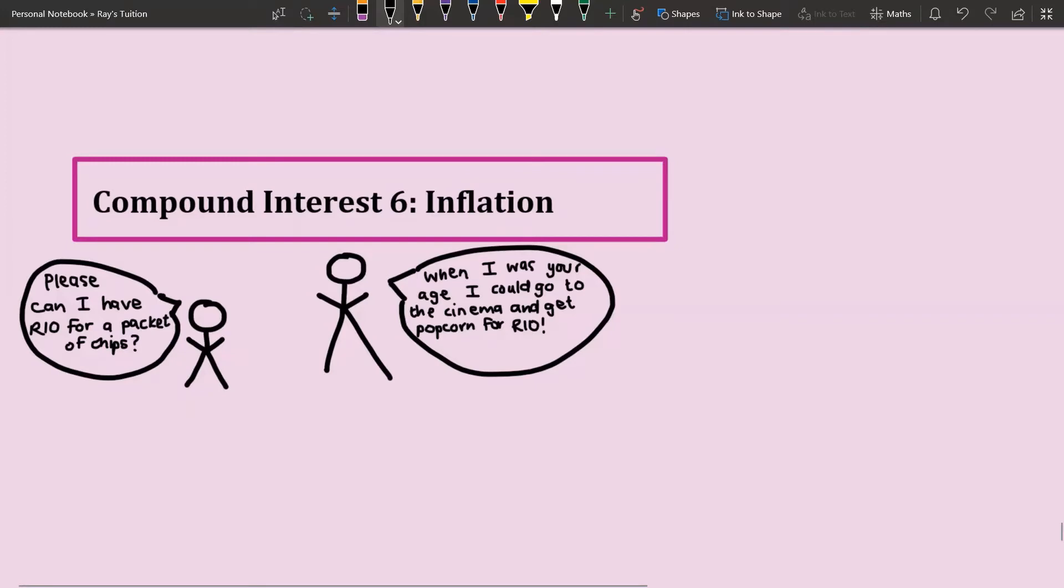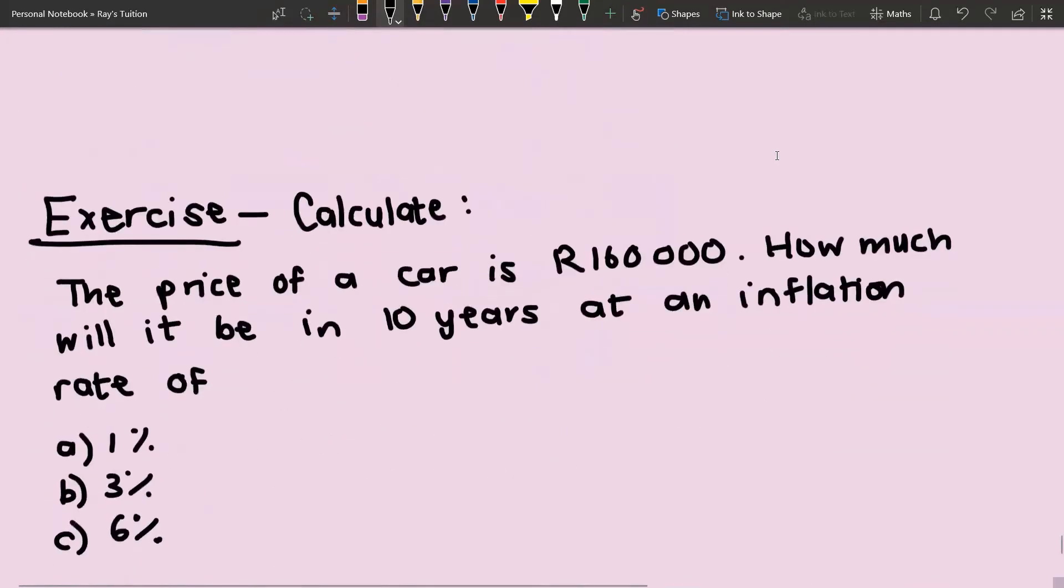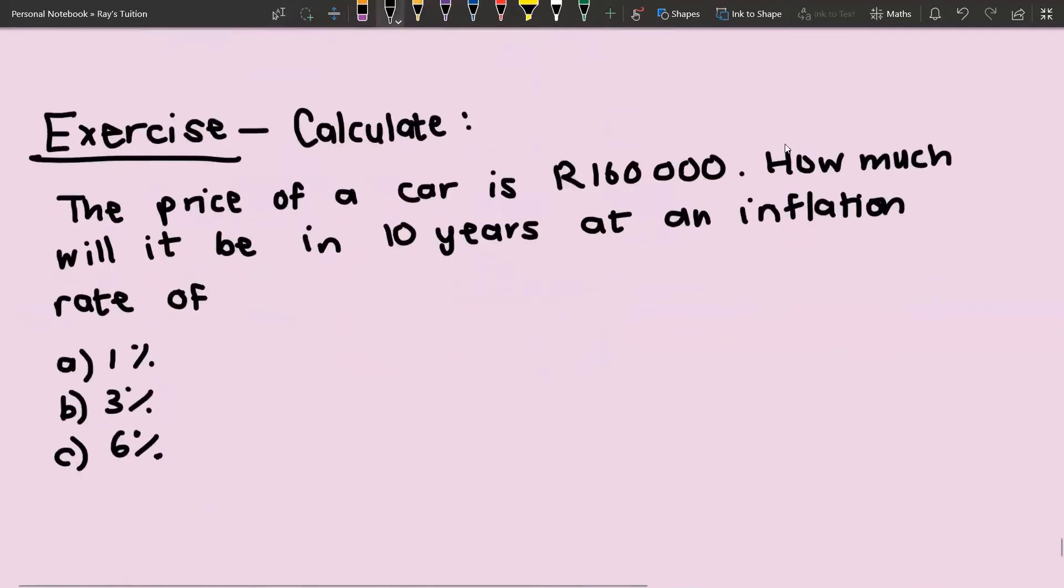We're going to have a look at some examples. Here we have, it says calculate: The price of a car is R160,000. How much would it be in 10 years at an inflation rate? And then we have different inflation rates.